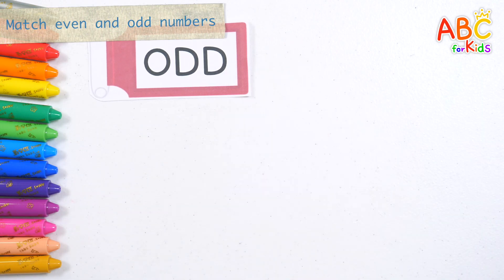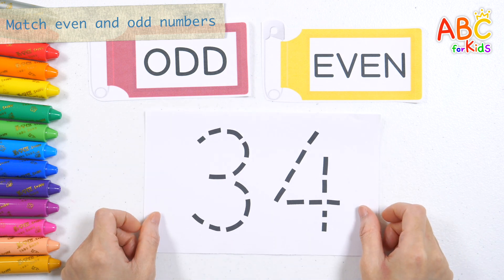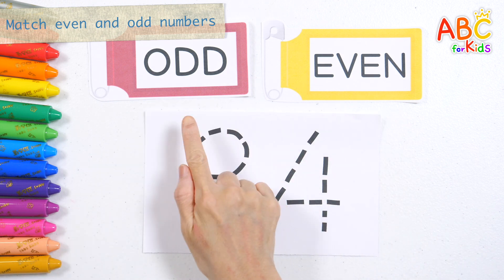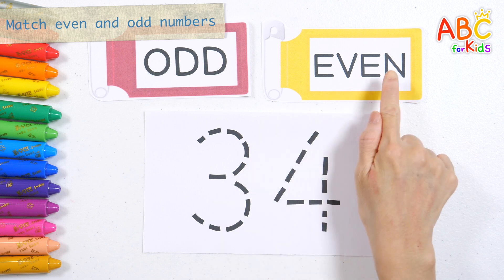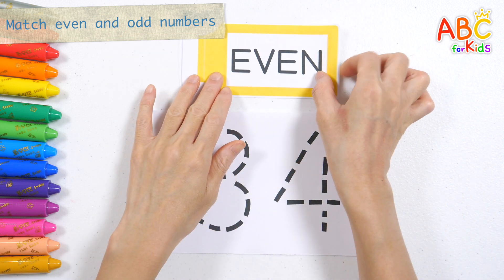Odd. Even. Is the number 34 odd or even? The number 34 is even.